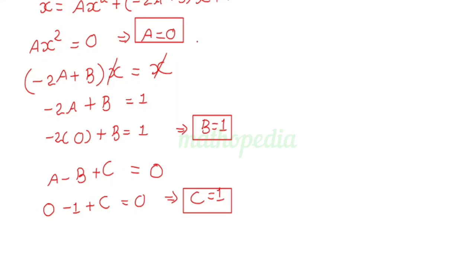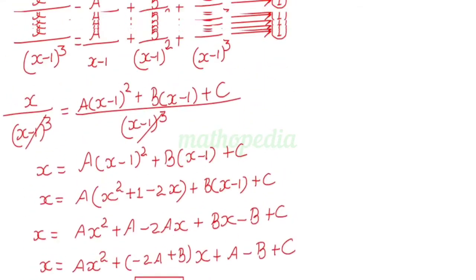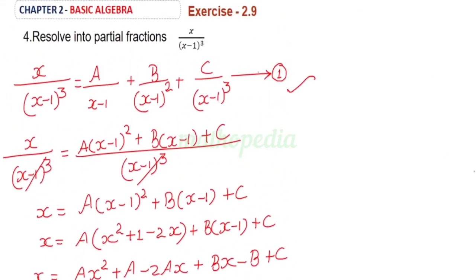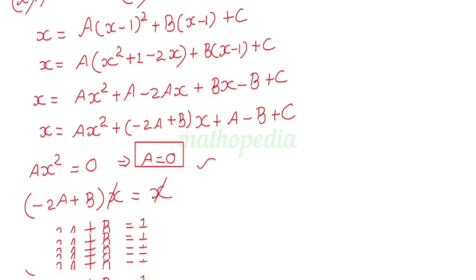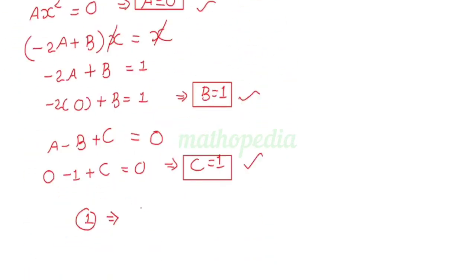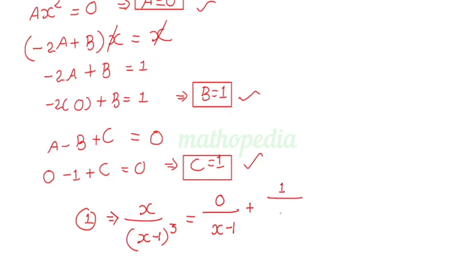So we have got the values A equals 0, B equals 1, and C equals 1. Substituting these values into equation 1: x by (x minus 1) whole cube equals 0 by (x minus 1) plus 1 by (x minus 1) whole square plus 1 by (x minus 1) whole cube.